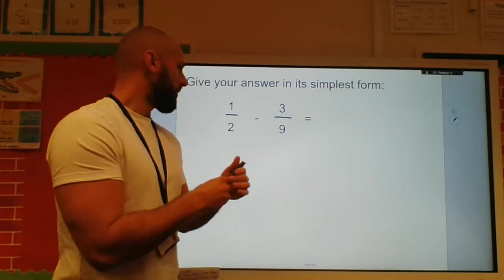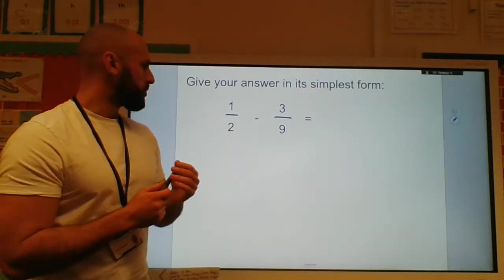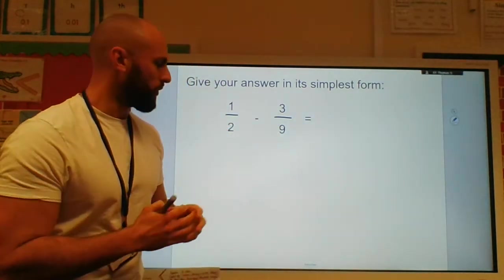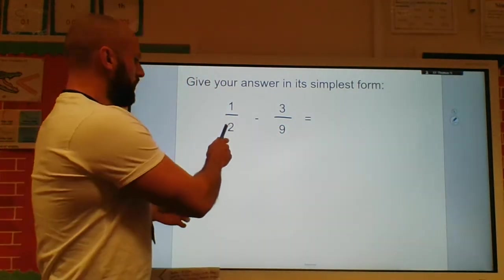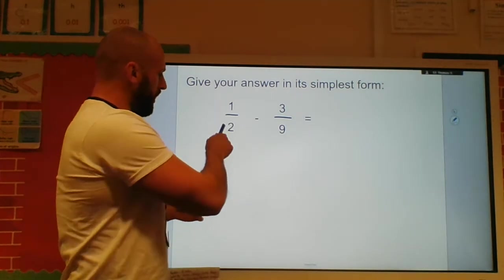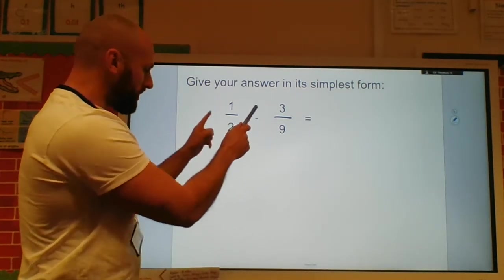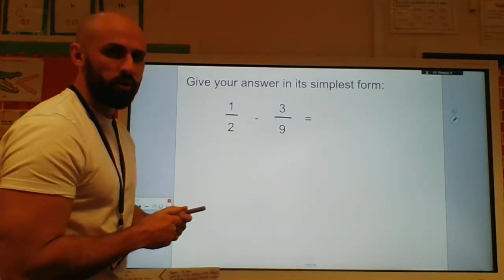So here now, we've got another subtraction one here. We've got to give our answer in the simplest form. We've got to simplify. So again, I've got half, take away three-ninths. Two different denominators.